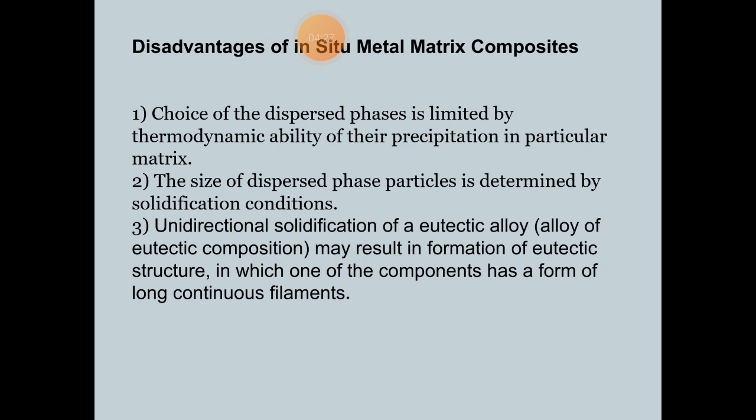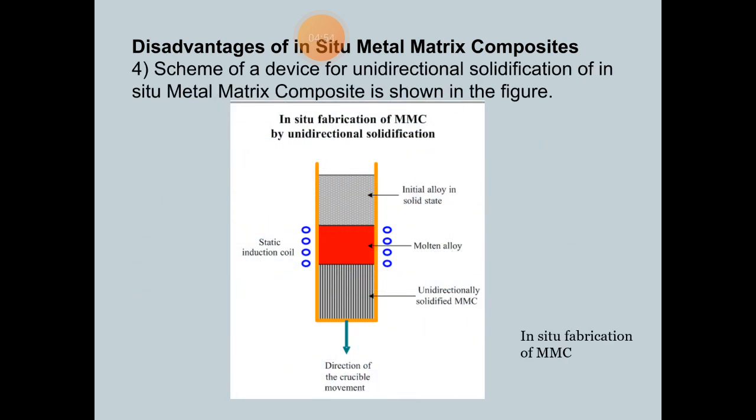The second disadvantage is that the size of dispersed phase particles is determined by solidification conditions. Additionally, unidirectional solidification of a eutectic alloy — that is, an alloy of eutectic composition — may result in the formation of a eutectic structure in which one of the components has the form of long continuous filaments. The scheme of the device for unidirectional solidification of in-situ metal matrix composites is shown in the figure.